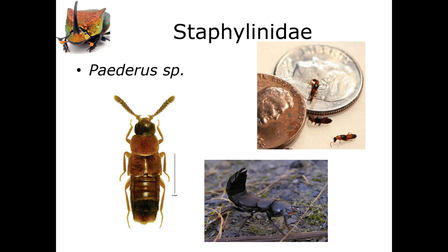Let's start with Staphylinidae. Staphylinidae are one of those eight most common families, and they are commonly called the rove beetle. Rove beetles occur pretty much everywhere, all over the earth, and both the adults and the larvae are predaceous.